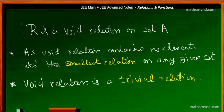There are two important points which we should note as far as void relations are concerned. The first point is that as it doesn't contain any element, it simply means that when we consider particular relations, void relation is the smallest relation. The smallest here means its cardinality is 0 or it doesn't contain any elements.